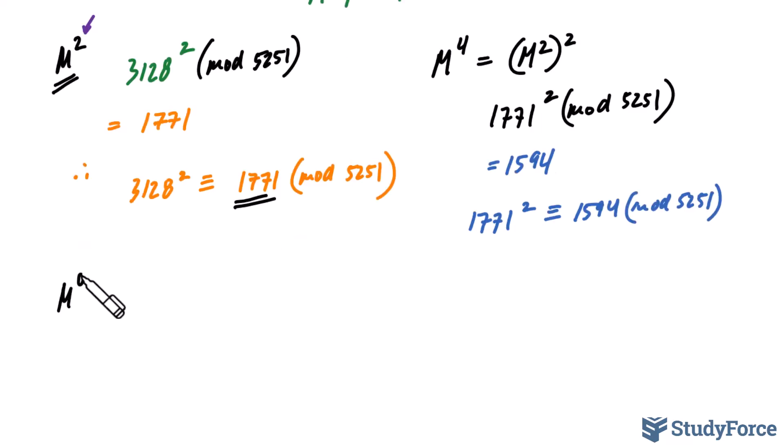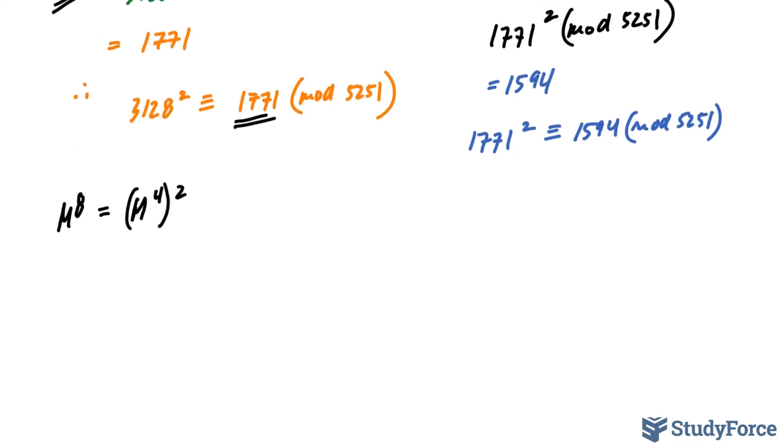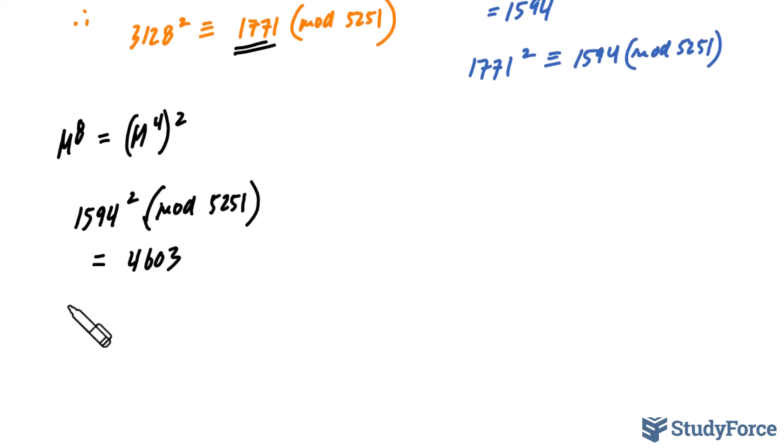Let's keep going. m^8 is no different than saying (m^4)^2. So we'll take the value that we found, that remainder from before, 1594^2 modulo 5251. The remainder of that value divided by 5251, I've calculated it already to be 4603. And so we'll write down 1594^2 is congruent to 4603 mod 5251.